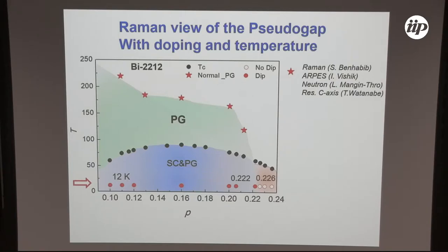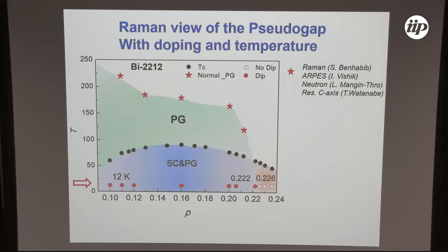The accuracy of the doping level may seem surprising, but one unit in the third decimal corresponds to 1 Kelvin, and here we have a difference of 4 Kelvin — a difference we are able to resolve experimentally. The absolute value has some uncertainty, but the relative difference is reliable.